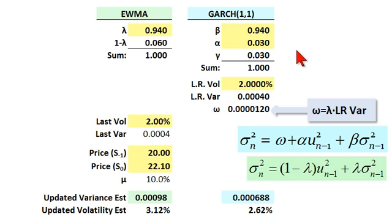Hi, this is David of Bionic Turtle with a comparison of two of the most popular methods for estimating conditional volatility. On the left, exponentially weighted moving average. On the right, GARCH 1.1.